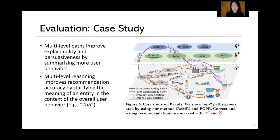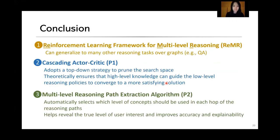In comparison, the baseline recommends an incorrect item because it misinterprets the meaning of 'top.' In conclusion, we propose a reinforcement learning framework for multi-level reasoning that can generalize to other reasoning tasks over graphs such as question answering. We also propose a cascading actor-critic that adopts a top-down strategy to prune the search space and theoretically ensures high-level knowledge guides low-level reasoning to converge to more satisfying solutions. Lastly, we propose a multi-level reasoning path extraction method that automatically selects which level concepts to use at each hop, helping reveal the true level of user interest and improving both accuracy and explainability.